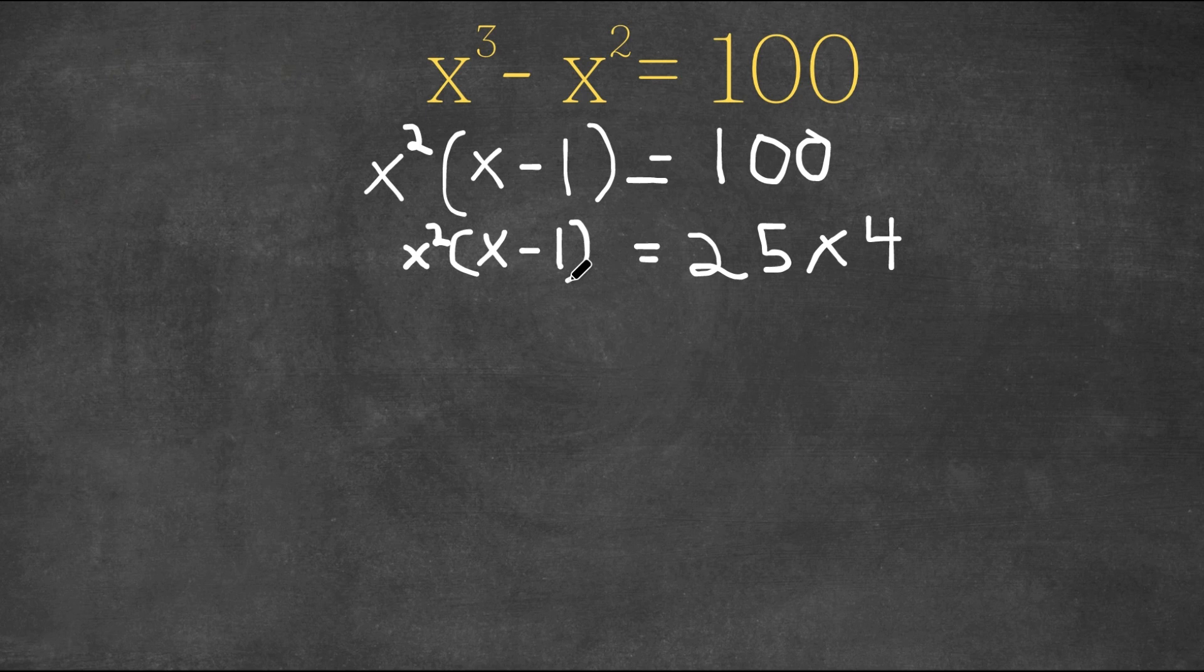Now, this gives us 2 equations. We would have x squared equals 25, and x minus 1 equals 4.